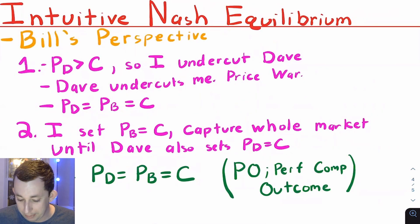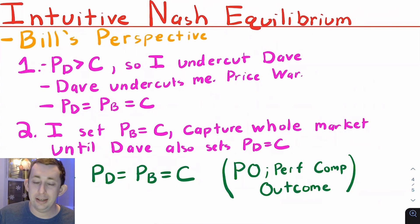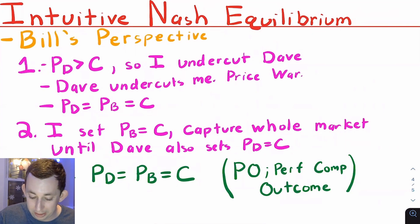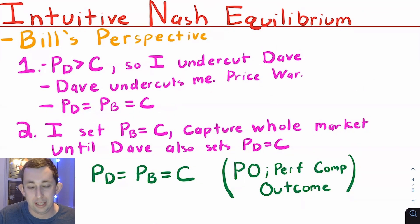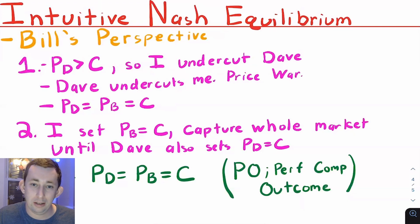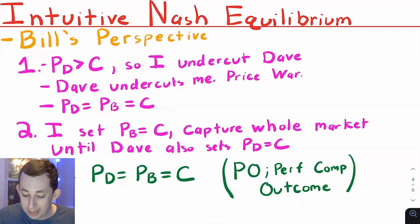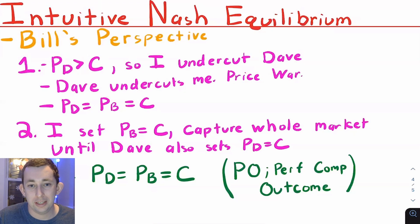This is a strategic interaction, so we talk about Nash equilibrium. Rather than proving it mathematically, let's use intuition. Say Dave is charging a price higher than his marginal cost — he's making a profit on each pastry. As Bill, I can undercut Dave: I charge a price between my cost and Dave's price, make a positive profit, and everyone leaves Dave's store for mine. Then Dave says, 'I can also go lower,' between his cost and Bill's price. This keeps going and starts a price war.